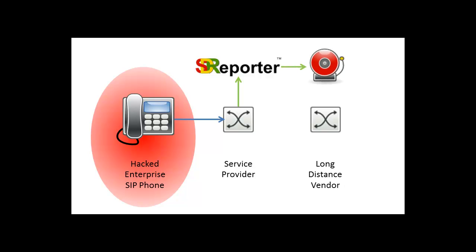For Broadworks users, SD Reporter can also use OCIP API commands to automatically disable Broadworks user IDs that activate a fraud trigger.